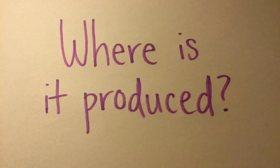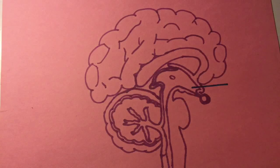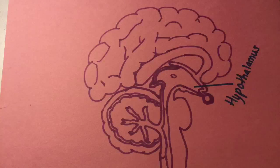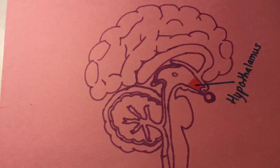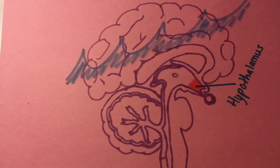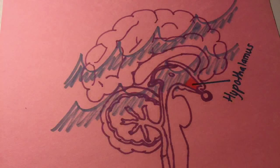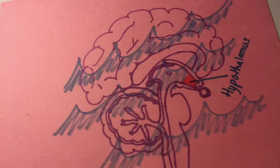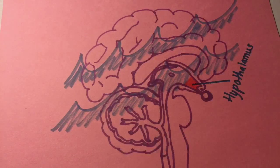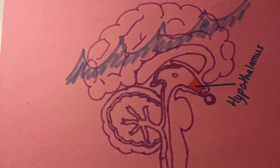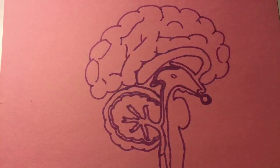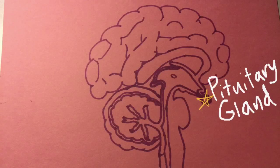ADH is produced in the part of the brain called the hypothalamus. The hypothalamus detects the amount of water in the blood. If the water content is low, the hypothalamus sends a message to the pituitary gland, which stores and releases ADH.